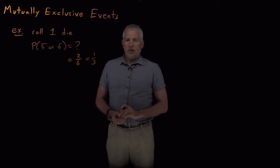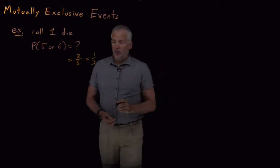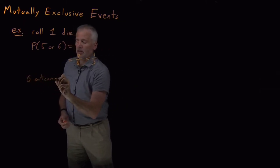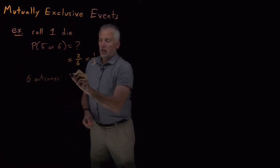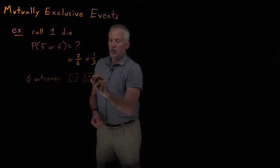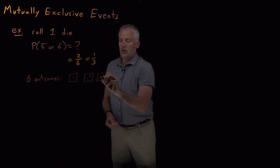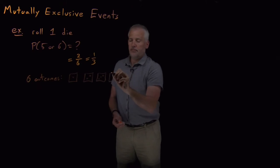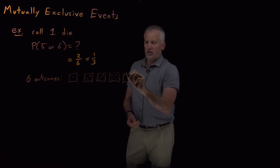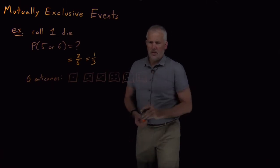So like I said, easy problem to start out with, but when we explain the logic behind that answer a little more clearly it'll help us introduce some terminology. So there's six different outcomes that we could have gotten. We could roll a one, we could roll a two, a three, a four.